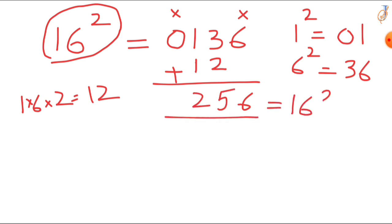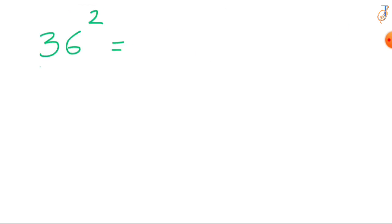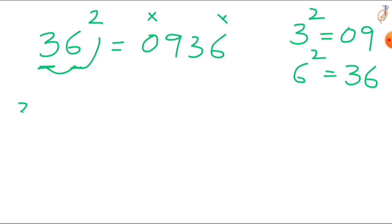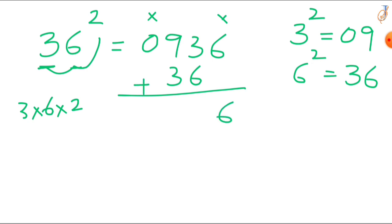So 16 squared equals 256. Now take 36. Square the tens digit: 3 squared is 9, write it as double digit — 09. Then square the units digit: 6 squared is 36, write 36. Skip the first and last digits and multiply: 3 times 6 is 18, 18 times 2 is 36. Finally add all the numbers.